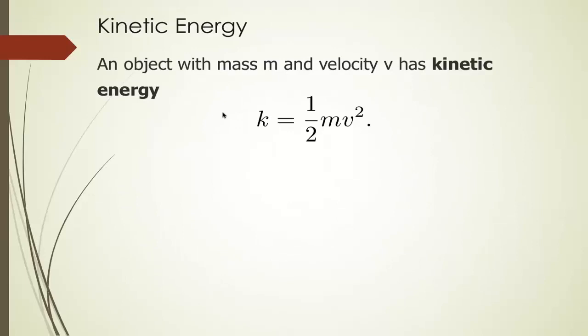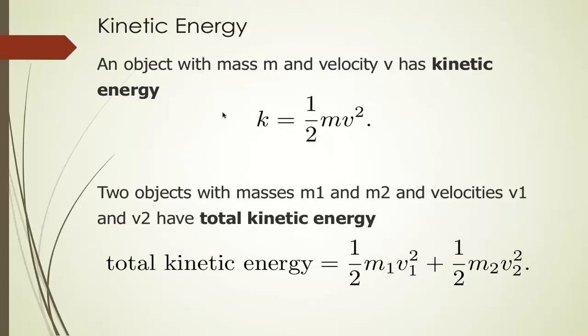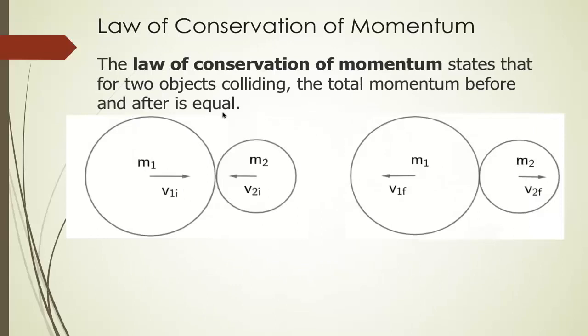An object with mass m and velocity v has kinetic energy equal to one-half mv squared. Two masses m1 and m2 with velocities v1 and v2 have total kinetic energy equal to the sum of their individual kinetic energies — in other words, one-half m1 v1 squared plus one-half m2 v2 squared.